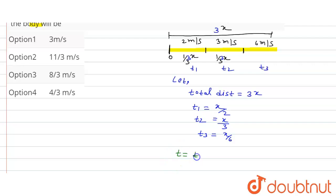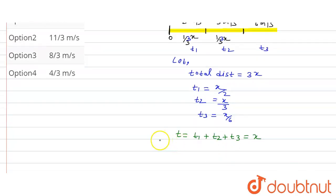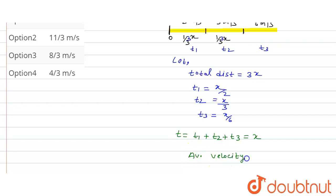Total time T = t1 + t2 + t3 = x/2 + x/3 + x/6 = x. Average velocity = total distance / total time = 3x / x = 3 meters per second.